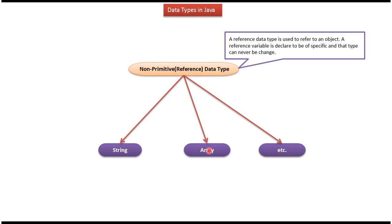String and array are examples of non-primitive data types and non-primitive data type is also called reference data type. A reference data type is used to refer to an object. And this is about Java data types and thanks for watching.